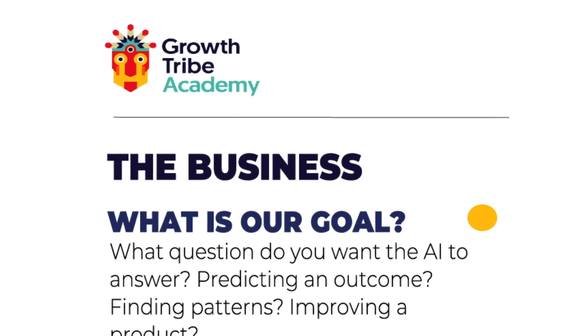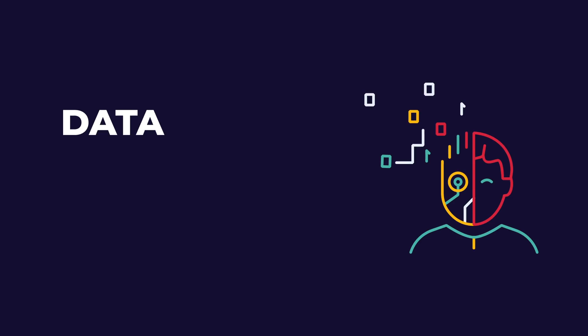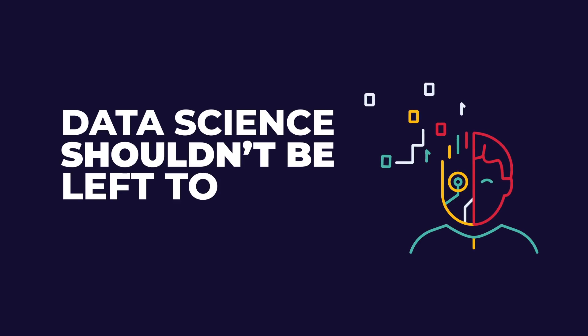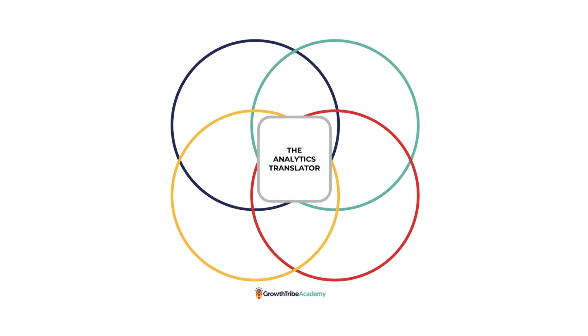First of all, the business — and funnily enough, this is a very often overlooked part of an AI project. We've often said that data science shouldn't be left to data scientists alone. It should also be in the hands of domain experts or heads of departments who understand the business implications of running an AI project. Check out our video where we talk about a new role called the analytics translator, which is a mix of domain knowledge, AI intuitive understanding, project management, and enterprising spirit.